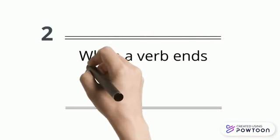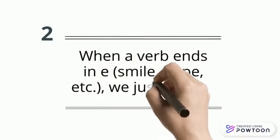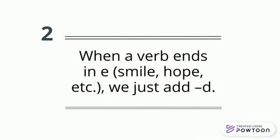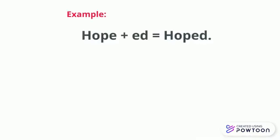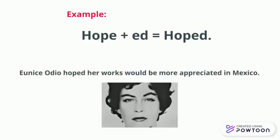When a verb ends in E, as in smile and hope, we just add the letter D. To illustrate, the word hope plus ED turns into hoped, as in: Eunice Odio hoped her words would be more appreciated in Mexico.